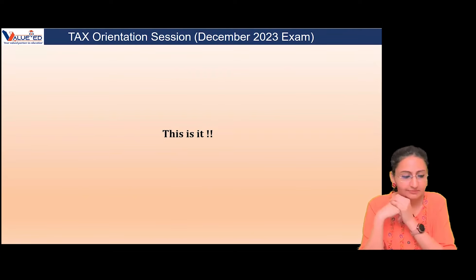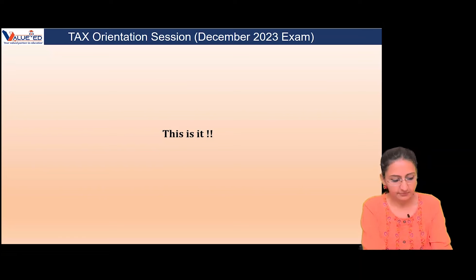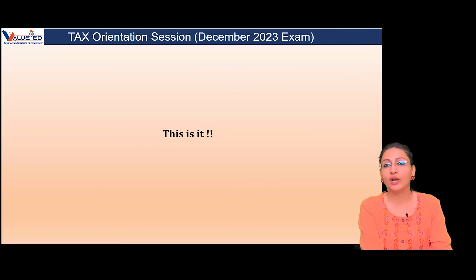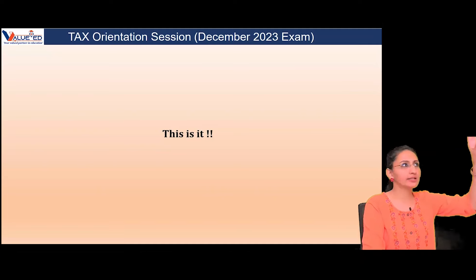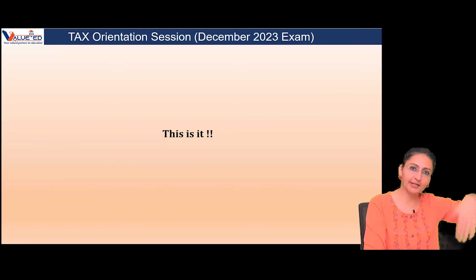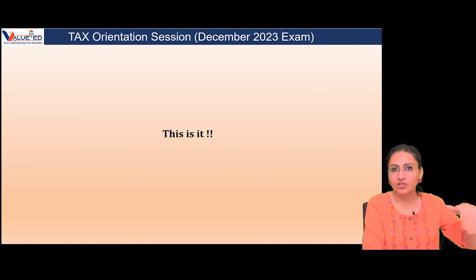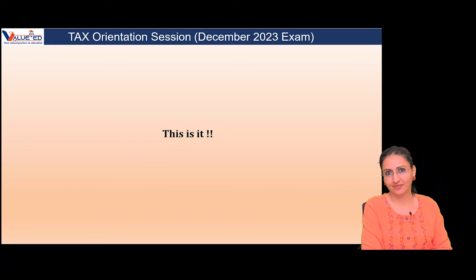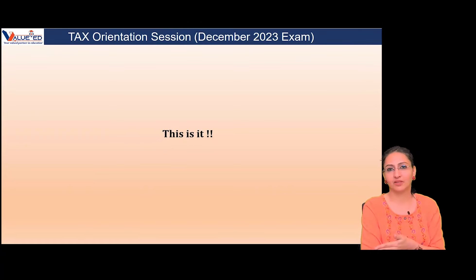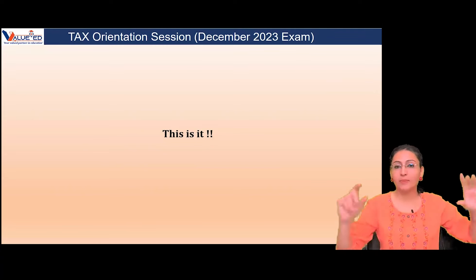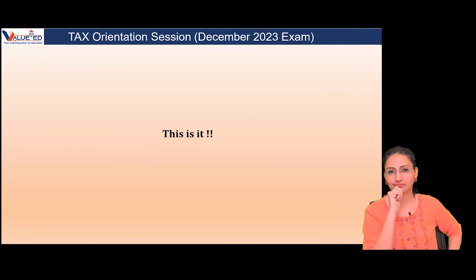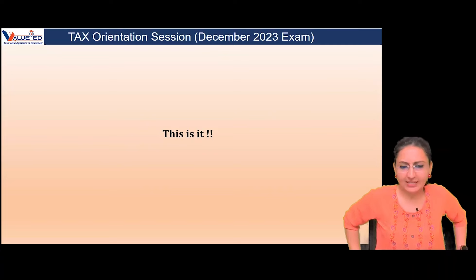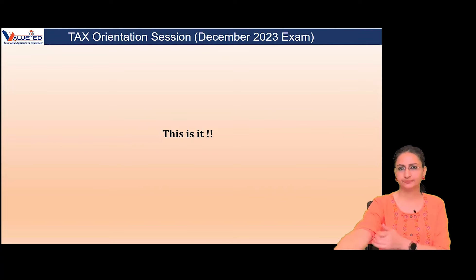Regarding exam materials — the tax rates and allowances table that Kaplan mentions at the start as 'will be provided in the exam' — that full set of pages will be given in the exam. The residency table will also be given. However, the time limit table shown separately in the exam kit will not be provided in the exam. I've specified in the notes which tables are given in the exam.